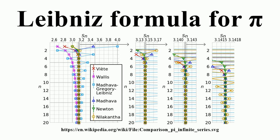This series can also be transformed into an integral by means of the Abel-Plana formula and evaluated using techniques for numerical integration. Unusual behavior: if the series is truncated at the right time, the decimal expansion of the approximation will agree with that of pi for many more digits, except for isolated digits or digit groups. For example, taking 5 million terms yields 3.1415924535897932384646433832795027841971693993873058, where the underlined digits are wrong.